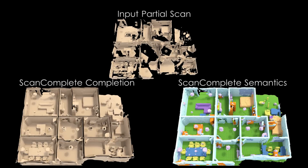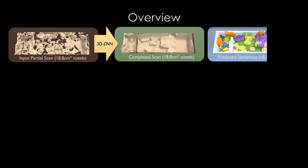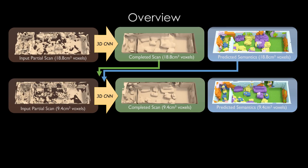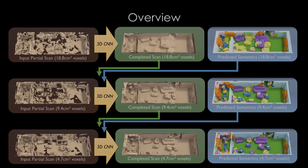We take as input a partial scan encoded as a signed-distance function in a volumetric grid. We then leverage fully convolutional neural networks, enabling completion prediction on 3D scans of entire scenes, as well as semantic inference. In order to maintain both high output resolution as well as large input context, we use an autoregressive, coarse-to-fine multi-resolution hierarchy, enabling consistent, detailed predictions.